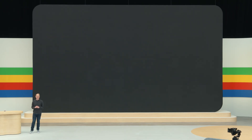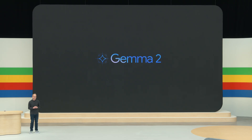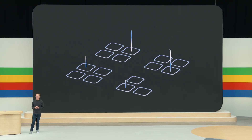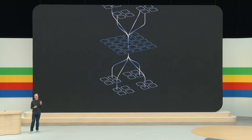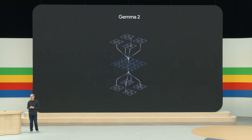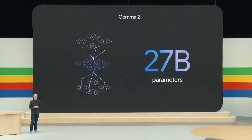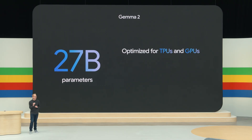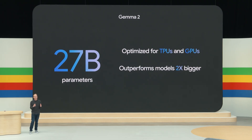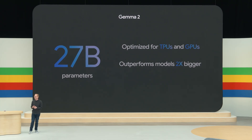I'm also excited to announce that we have Gemma 2 coming — it's the next generation of Gemma, and it will be available in June. One of the top requests we've heard from developers is for a bigger Gemma model that's still going to fit in a size that's easy for all of you to use. So in a few weeks, we'll be adding a new 27B parameter model to Gemma 2. This size is optimized by NVIDIA to run on next-gen GPUs and can run efficiently on a single TPU host in Vertex AI. This quality-to-size ratio is amazing because it'll outperform models more than twice its size.